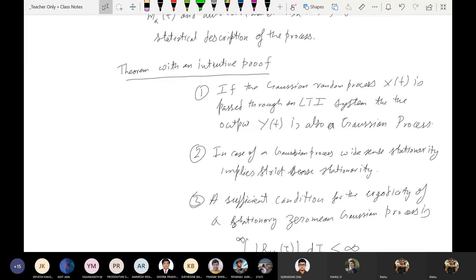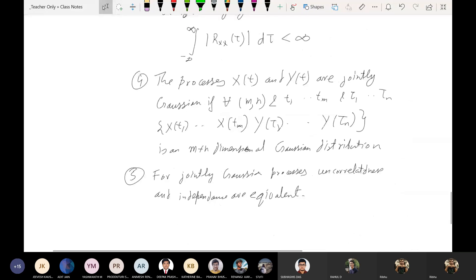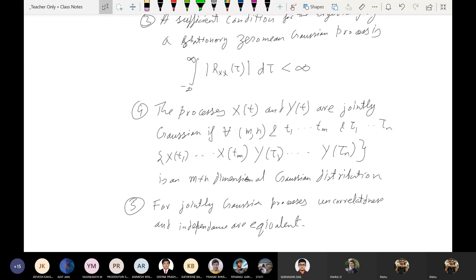Since now everything is describable in the terms of an autocorrelation function, and the joint PDF for n-points will also be described by their covariance matrix, because of that, wide-sense stationarity implies strict-sense stationarity. We need to work on that. Third, a sufficient condition for the ergodicity of a stationary zero-mean Gaussian process is this. Unfortunately, we do not have the luxury of time to prove this. This proof is slightly involved. The processes x(t) and y(t) are jointly Gaussian if for all M and N, this is an M plus N dimensional Gaussian distribution. This is also straightforward. For jointly Gaussian processes uncorrelatedness and independence are equivalent. This is also intuitive. These five properties of Gaussian random processes, these five properties are clear except the third one that you have to remember.